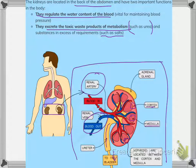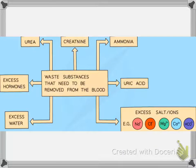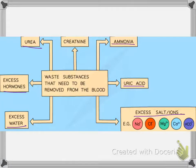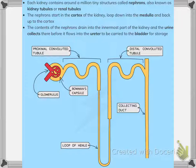The renal artery takes blood into the kidney. The waste substances that need to be removed from the blood include ammonia, uric acid, urea, excess hormones, excess water, excess salts and ions, and creatinine.